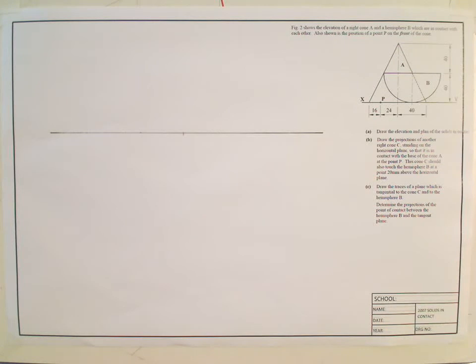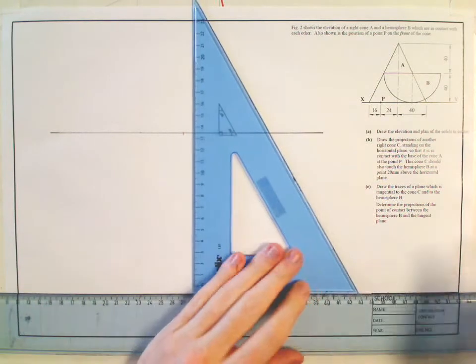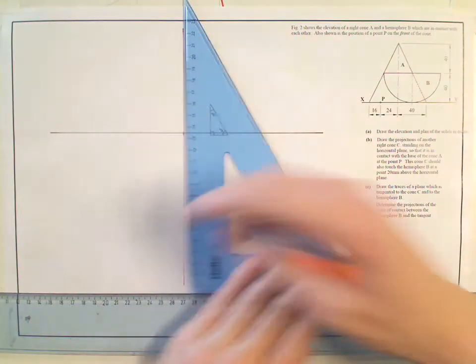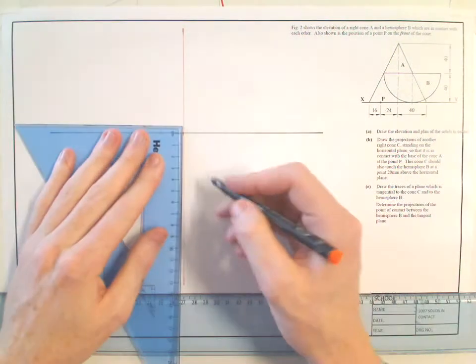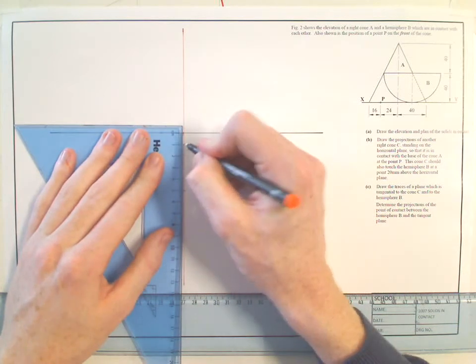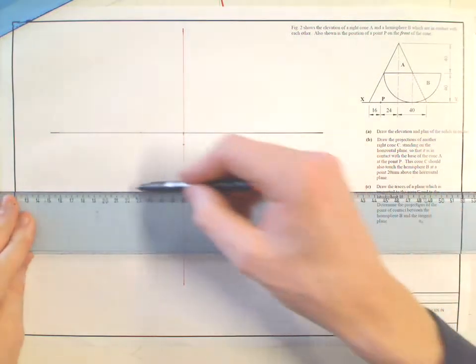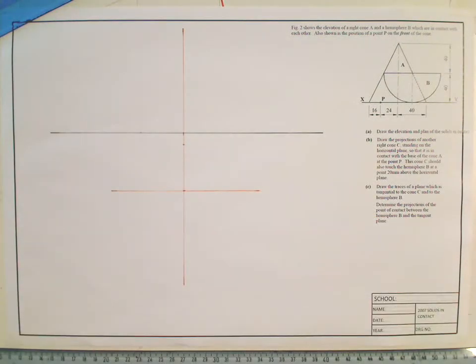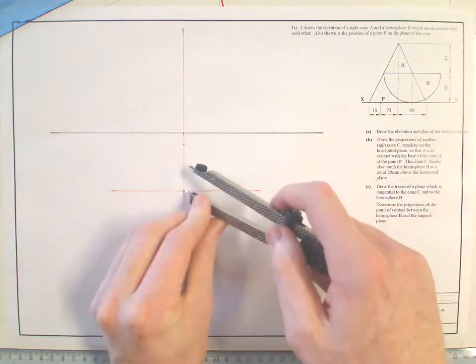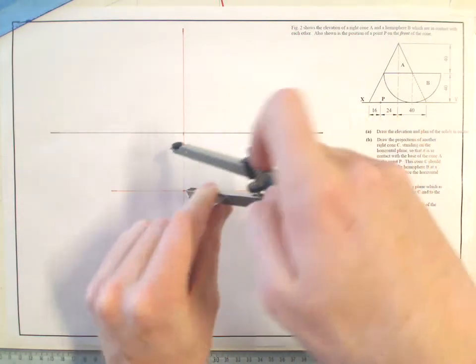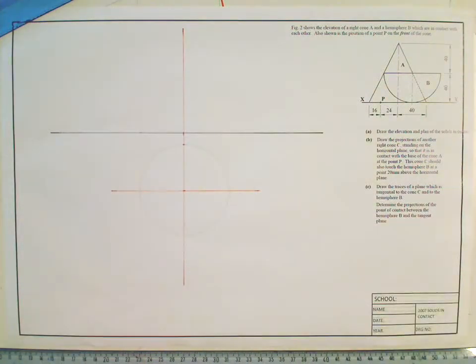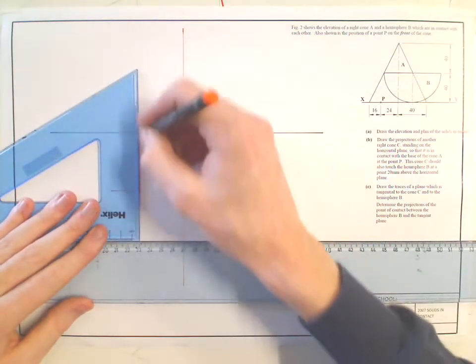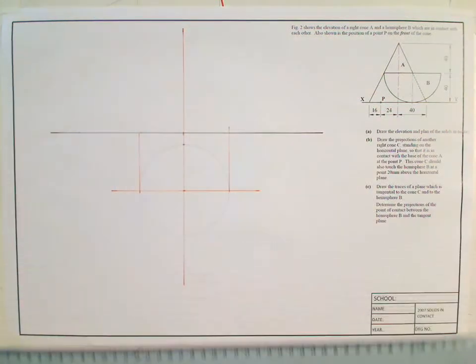So the first thing I'm going to do is draw the cone A in elevation and plan. I can come down a certain distance from my XY and I'm just going to draw the center of my cone here. And I know the radius of my cone is going to be 40. It's going to be 80mm height.